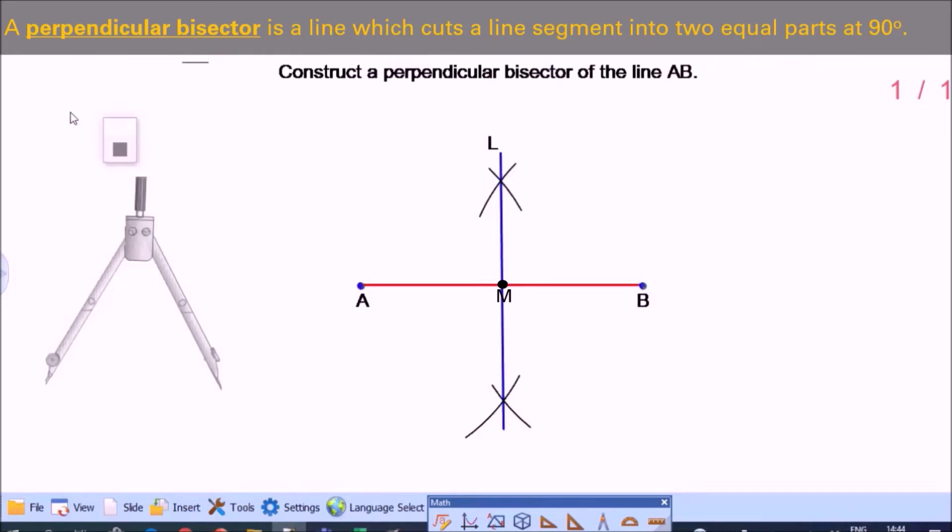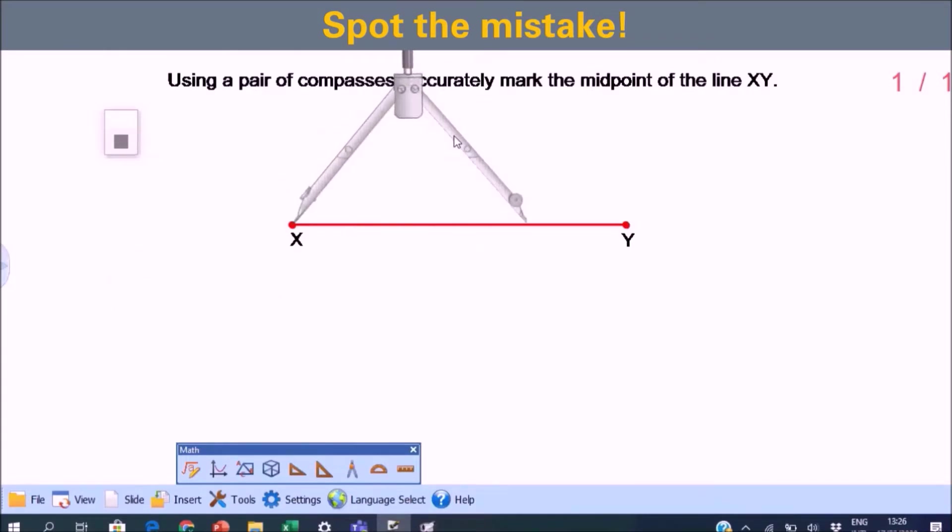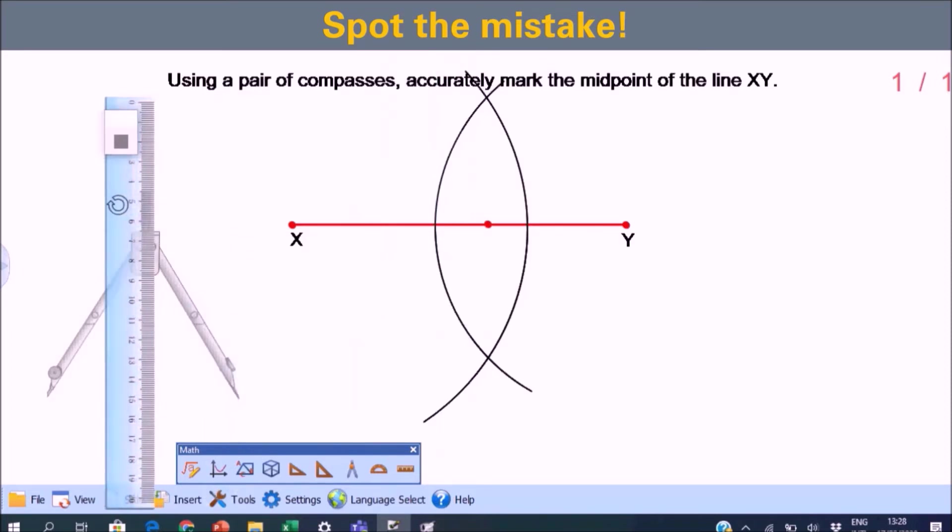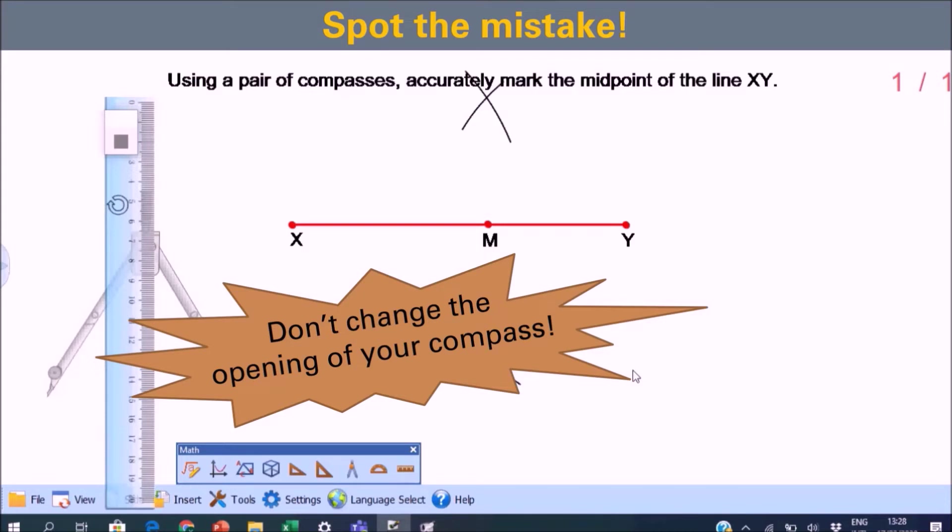Now watch this next construction and see what is the mistake. Did you notice the mistake? Yes, there is. So obviously, M here is not the midpoint. What was the mistake? Yes, they changed the opening of the compass. Very important that you don't change the opening of your compass when drawing the perpendicular bisector or identifying the midpoint of a line segment.